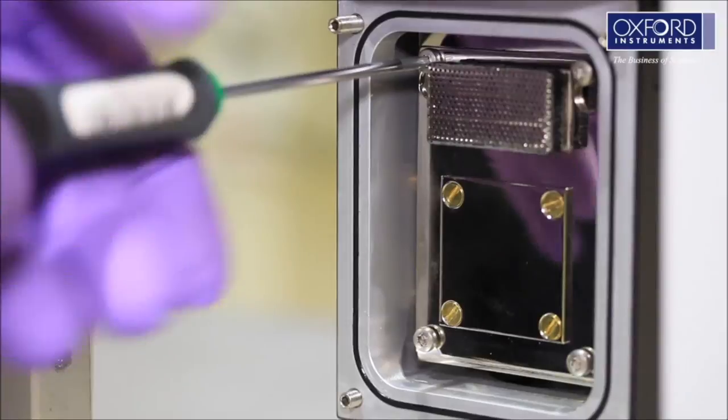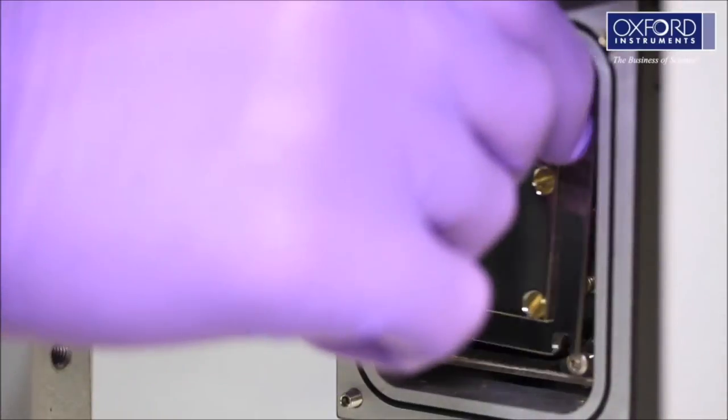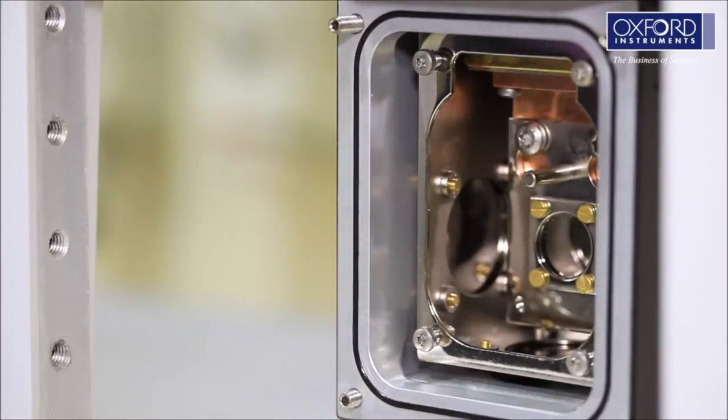Unscrew the four bolts holding the radiation shield plate by two or three turns. Lift the radiation shield plate and remove it.